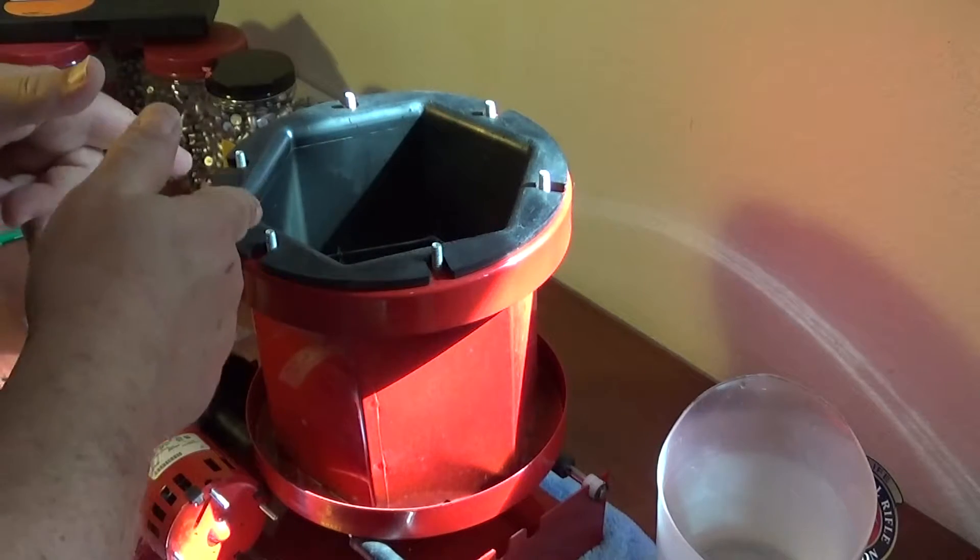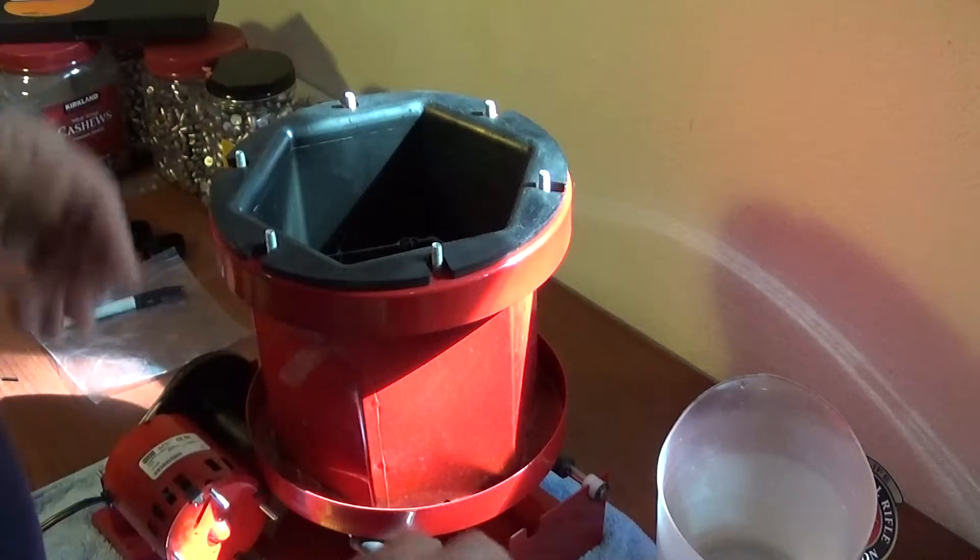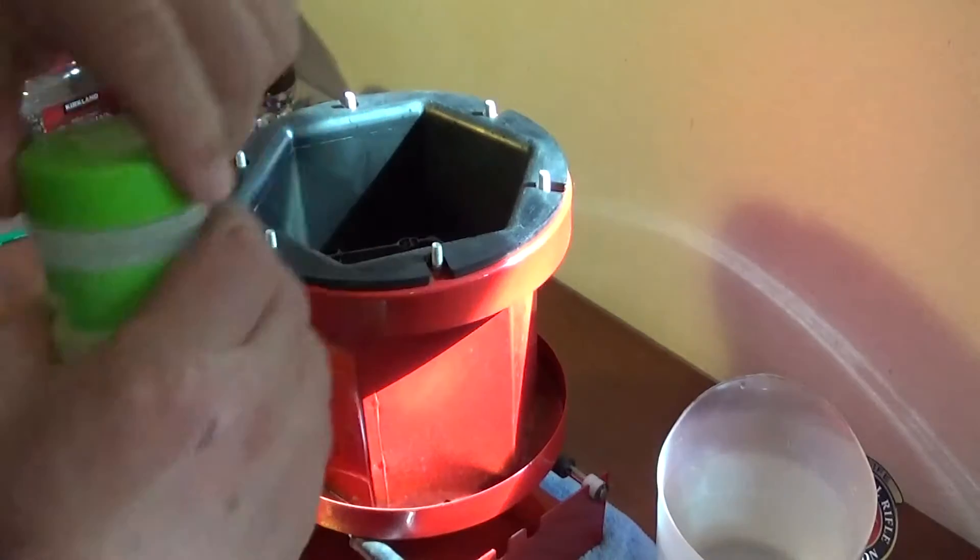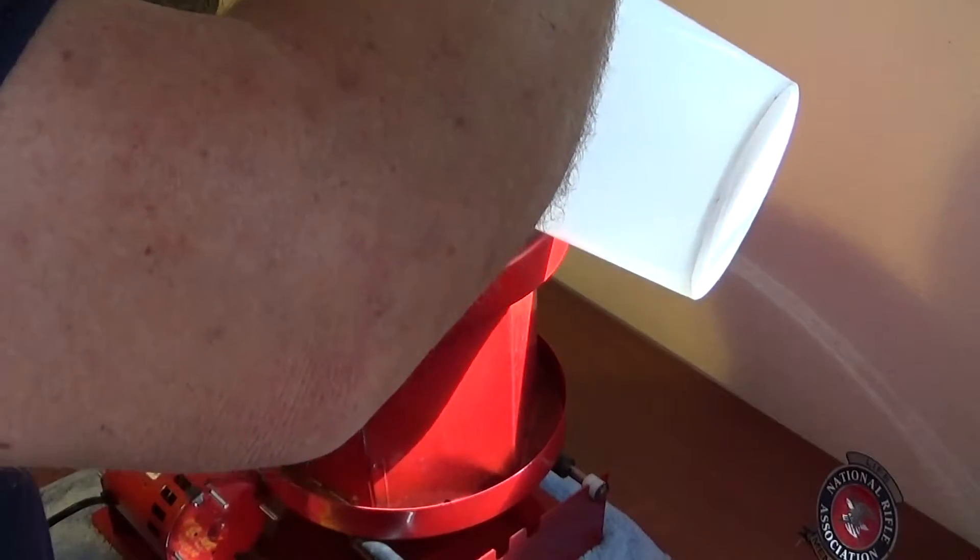All right, so we got our brass, we've got our Fruit Fresh and we have our Dawn dish washing soap in there and what we're going to do is we're going to fill this up with water right up to about the three-quarter mark.